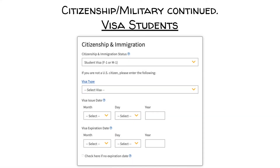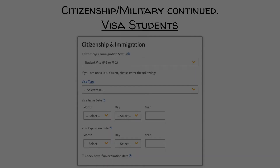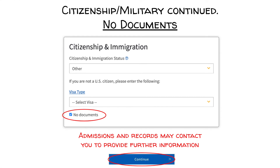Visa Students: If you are an international student or have a visa, please select the visa type and include the issue date and visa expiration date. You may be asked to provide additional information and then move on to the military question. No Documents: If you are a DACA student or a student who is not born in the U.S., please select Other and check the box that states No Documents. Just note that by clicking No Documents, Admissions and Records may contact you to provide further information later. Once the box is checked, click Continue.